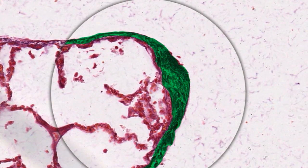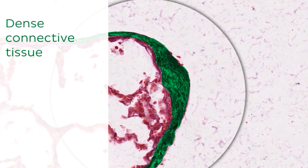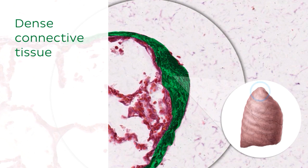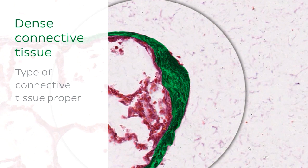Here we see a micrograph of dense connective tissue taken from the apex of the lung. Dense connective tissue is a type of connective tissue proper, and as the name suggests, it is more dense than other types of connective tissue.